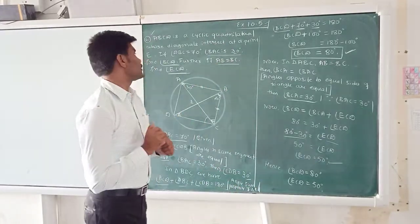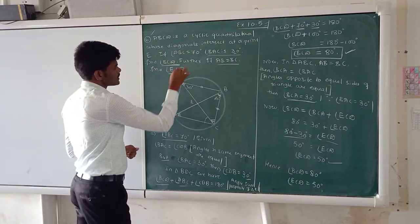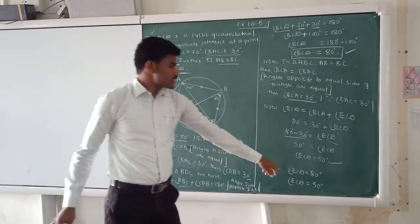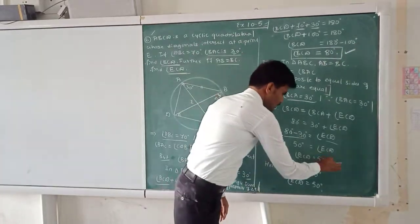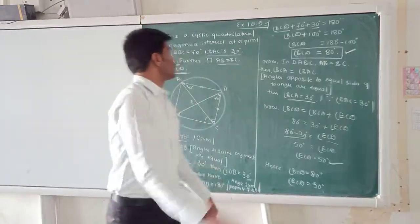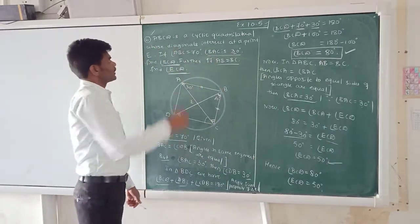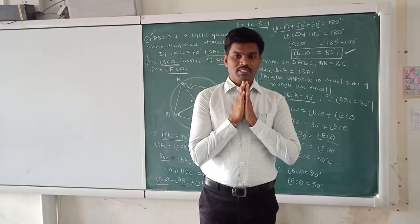So, what were they going to find out here? They were going to find out angle BCD as well as angle ECD. So, angle BCD we got here, 80 degrees. And, angle ECD we got here, 50 degrees. Okay? So, this is the steps how we need to solve exercise 10.5, 6th problem. Okay? So, namaste to all.